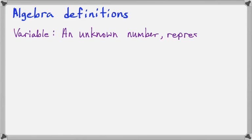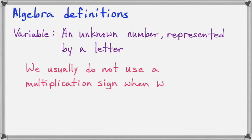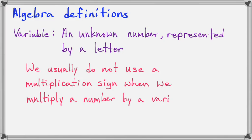The first one is the word variable, and a variable is just any number that we don't know. So it's an unknown number, and we usually represent that unknown number by a letter, frequently X, but it could be Y or any letter of the alphabet. We usually do not use a multiplication sign when we multiply a number by a variable. So it's pretty common to have just the number times the variable stuck together, written next to each other with no multiplication symbol between them, it's just understood. For example, 3X we understand is 3 times X, but we don't write the dot or any other kind of multiplication symbol, it's just understood.